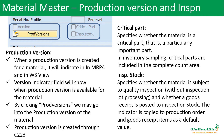Then we have the production version details, which are available in MRP4 view and also maintained here in the production scheduling view. By clicking the production version tab, we can go into the production version of the material. Production version is created through transaction C223. There is also a field called critical part, which specifies that the material is critical or very important — in inventory sampling, critical parts are included in complete count data. Then we have the inspection stock field, which specifies whether the material is subject to quality inspection and whether the goods receipt is posted to inspection stock. This indicator is copied into the production order during confirmation.